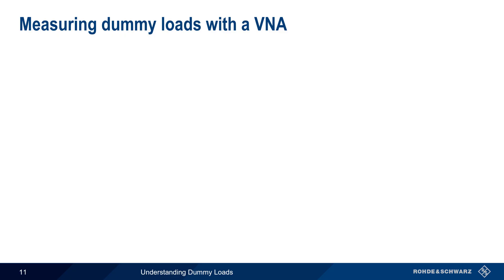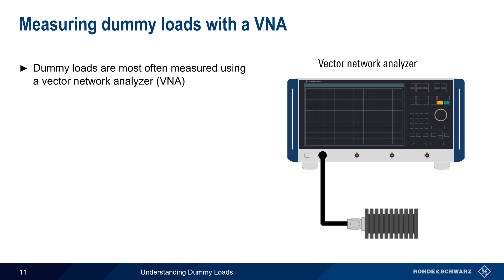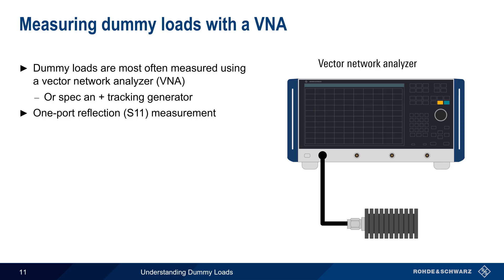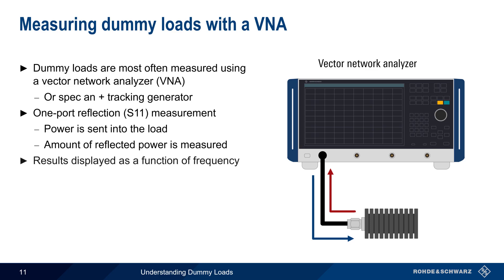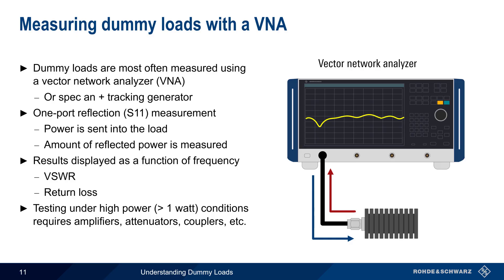Our next topic is how to measure or characterize dummy loads. In most cases, dummy loads are measured using an instrument called a Vector Network Analyzer or VNA, which can source and measure radio frequency signals. Alternatively, a spectrum analyzer and tracking generator can be used to obtain similar results. In either case, this is a one-port or so-called S11 measurement, in which a signal is sent into the load and the amount of power reflected by the load is measured as a function of frequency, with results shown either as VSWR or as return loss in dB. Note that stimulus signals from VNAs and tracking generators are usually relatively low power — on the order of tens of milliwatts — so external amplifiers, attenuators, couplers, etc., are needed if we want to test dummy loads under high power conditions.